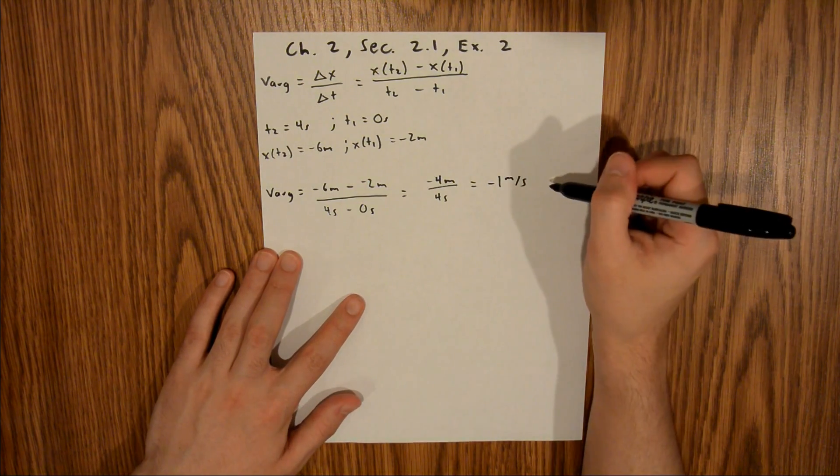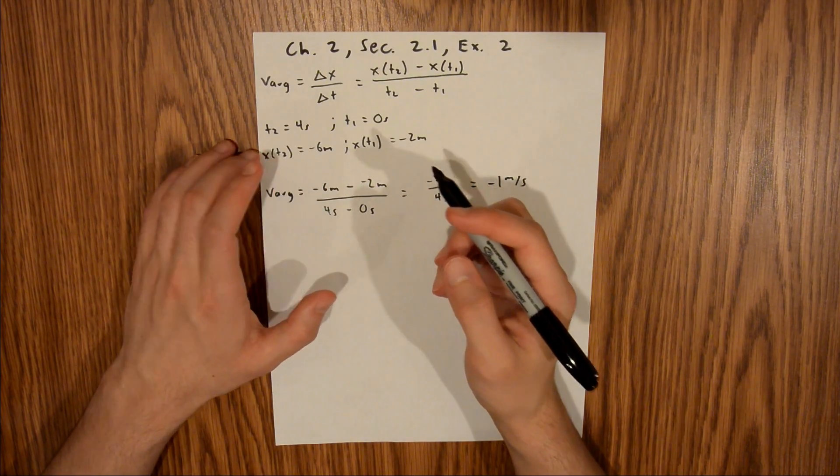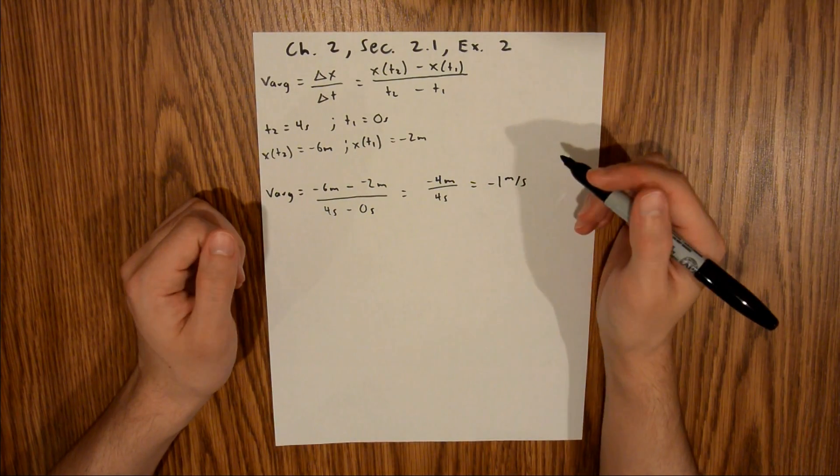That is the final answer for the average velocity of our particle from time t equals 0 to t equals 4 seconds.